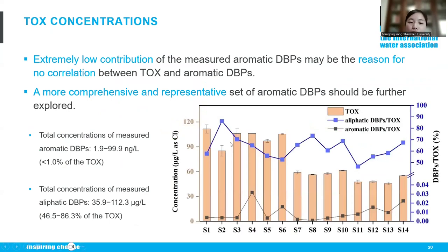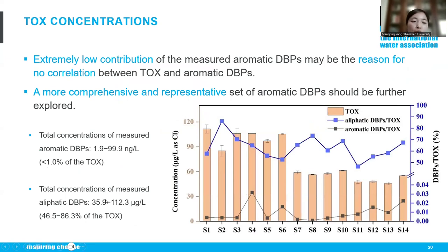The total concentration of measured aromatic DBPs was less than 1% of the TOX, while aliphatic DBPs correspond to over 46 to 86% of the TOX. Therefore, this data suggests that currently selected aromatic DBPs are insufficient to represent the overall aromatic DBPs.